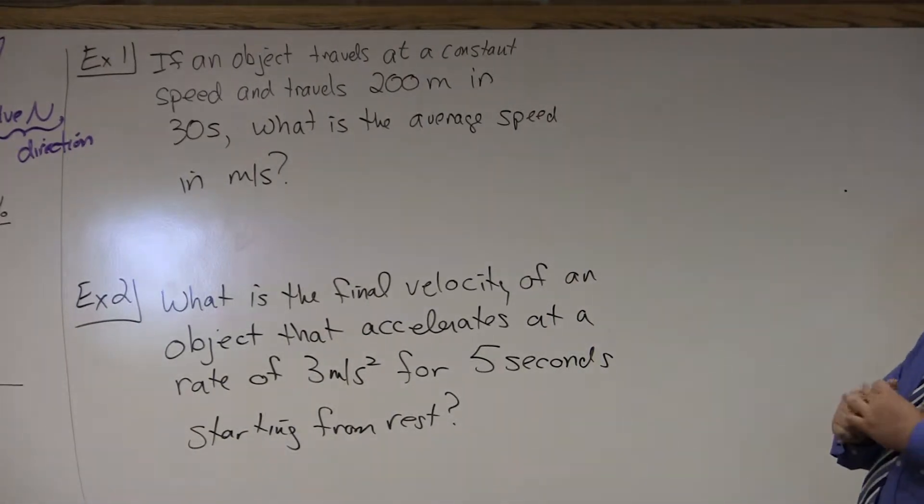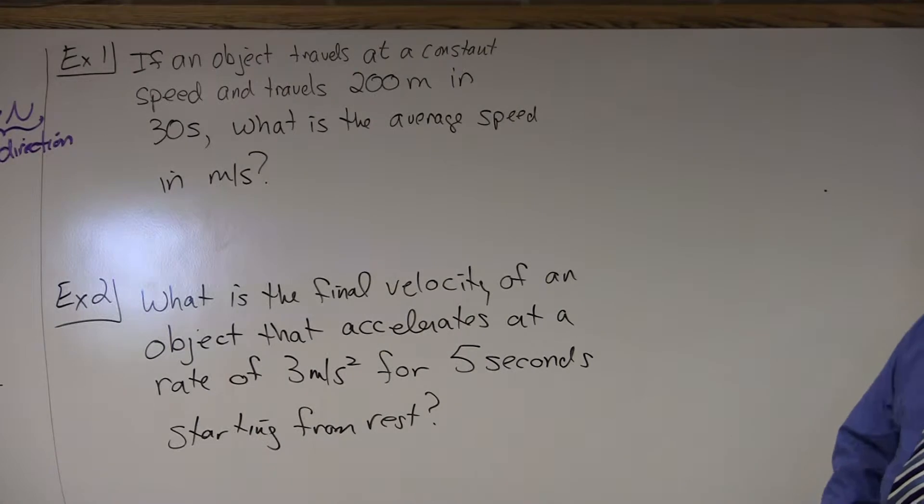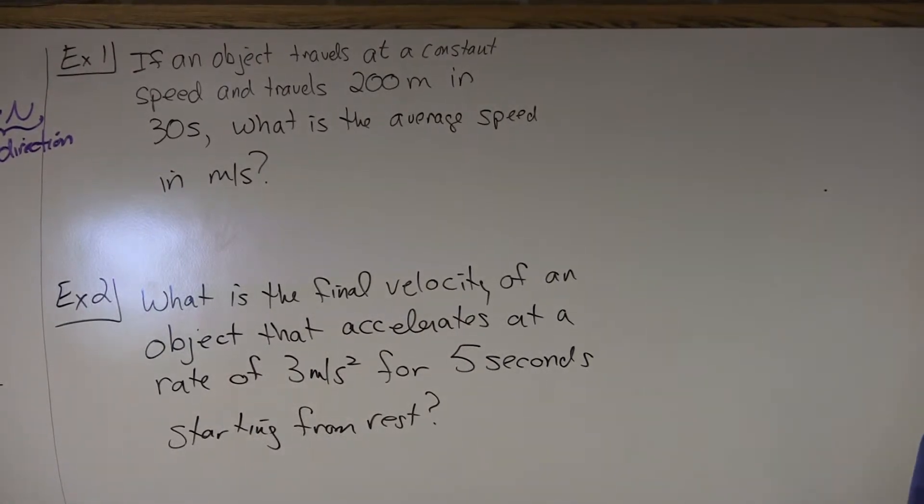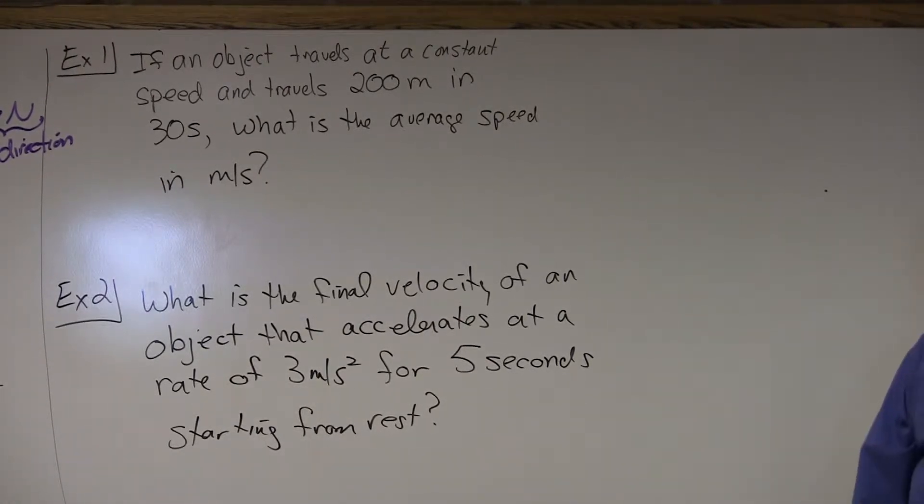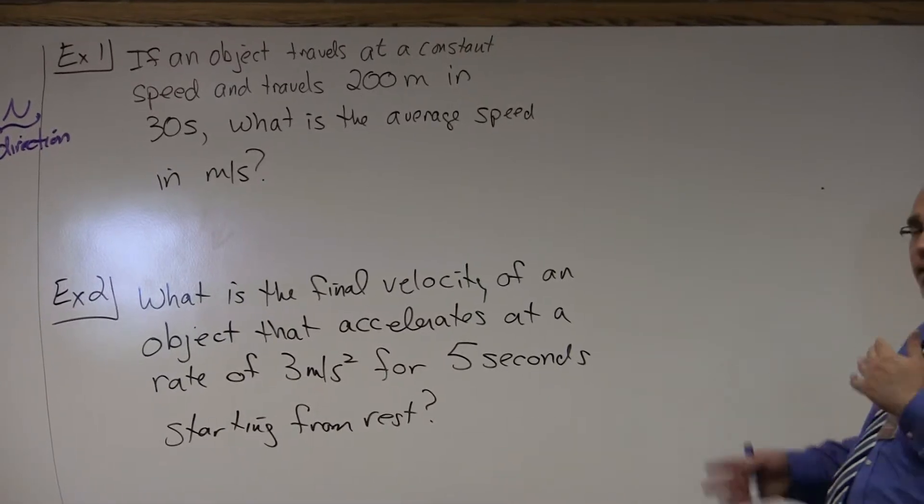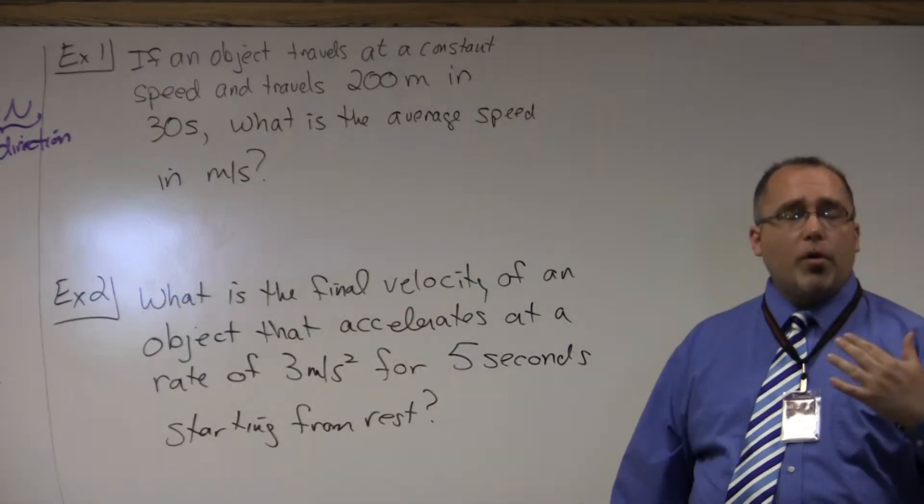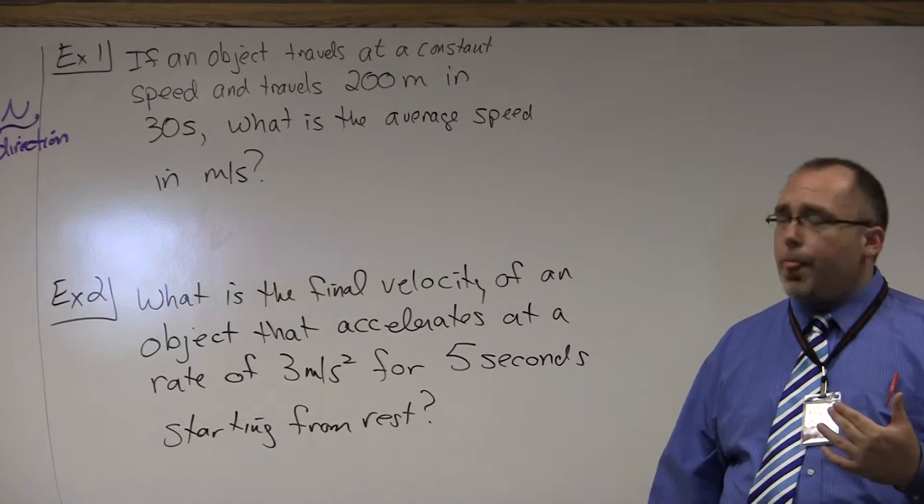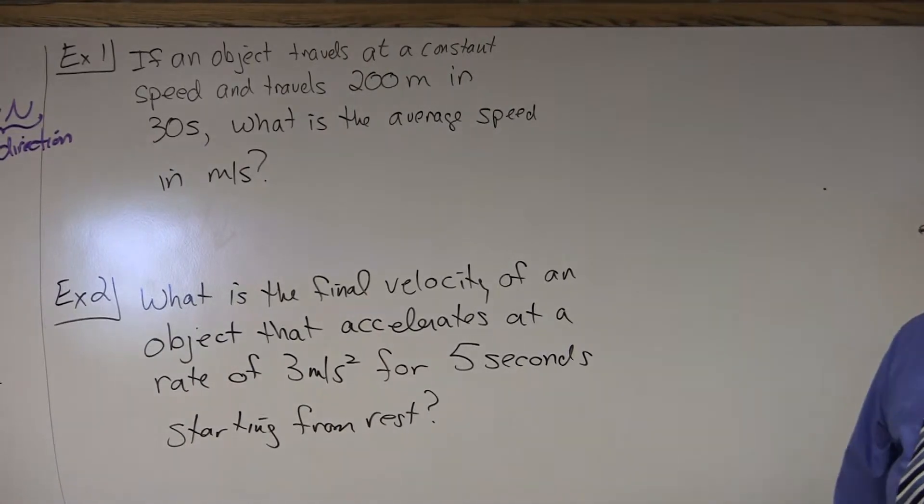Example one here says, if an object travels at a constant speed and travels 200 meters in 30 seconds, what is the average speed in meters per second? So a couple things we have to identify here. First, you always want to write out your given information. That will dictate what formula you have to use.